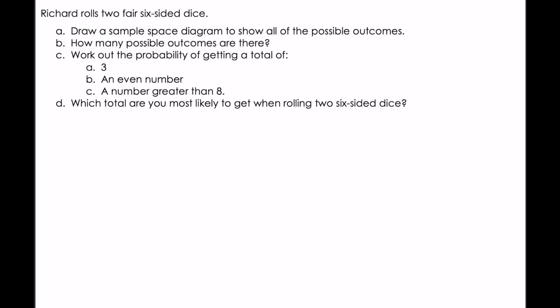For this diagram, I drew it large so you could see how to draw the diagram. The next two questions I have already drawn the diagram for. Richard rolls two fair six-sided dice. Draw a sample space diagram to show all the possible outcomes.